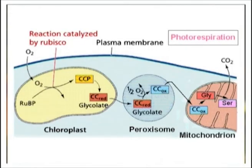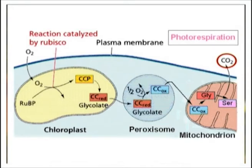The conversion of 2-carbon glycine to 1-carbon serine in the mitochondria by the enzyme glycine decarboxylase is a key step which releases carbon dioxide, ammonia, and reduces NAD to NADH. Thus, one carbon dioxide molecule is produced for every 3 molecules of oxygen — 2 deriving from the activity of rubisco and the third from peroxisomal oxidations. The assimilation of ammonia or NH3 occurs via the GS/GOGAT cycle at a cost of 1 ATP and 1 NADH.